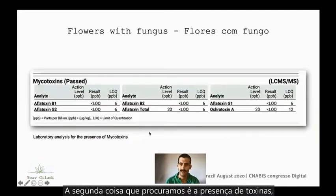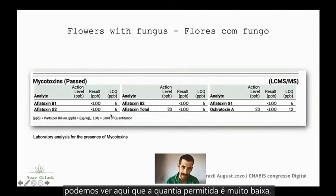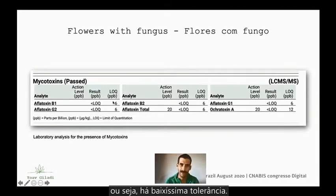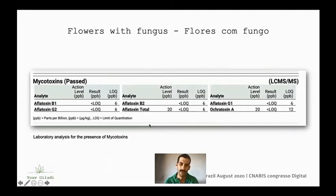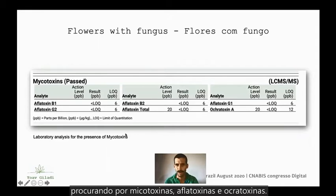The next thing to look out for is the presence of toxins. You can see that the limited amount is very, very low — six parts per billion — so there is very low tolerance. These are monitored using an LC-MS-MS, and we look out for mycotoxins such as aflatoxins and ochratoxins.